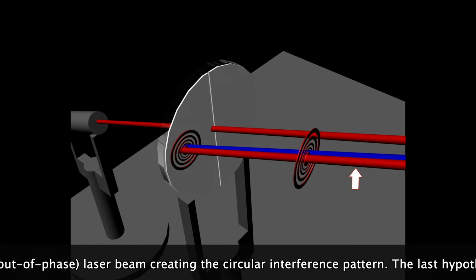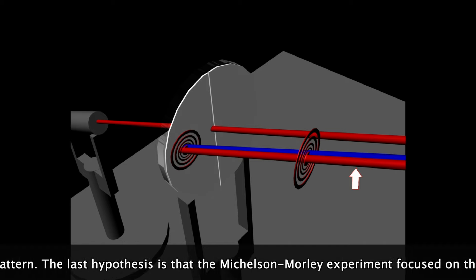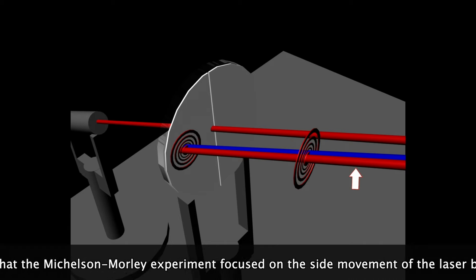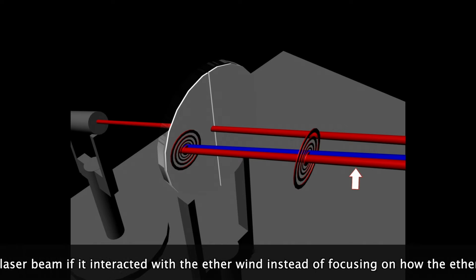The last hypothesis is that the Michelson-Morley experiment focused on the side movement of the laser beam if it interacted with the ether wind instead of focusing on how the ether wind affected the forward motion of the laser beams.